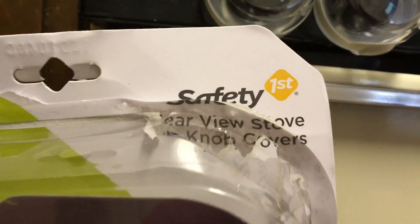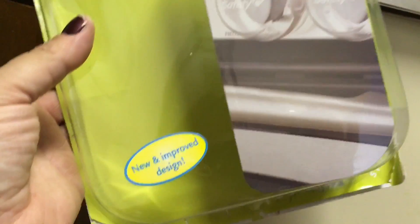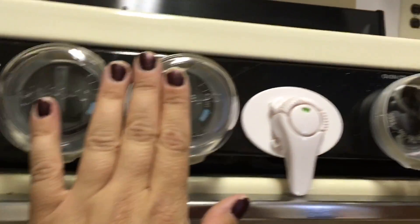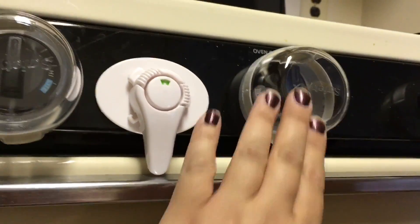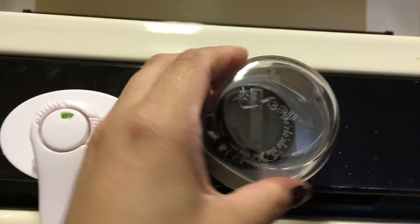This is the Safety First Clear View stove knob covers. Here is the box, and it comes five to a pack, of course for the four burners and then for the stove.